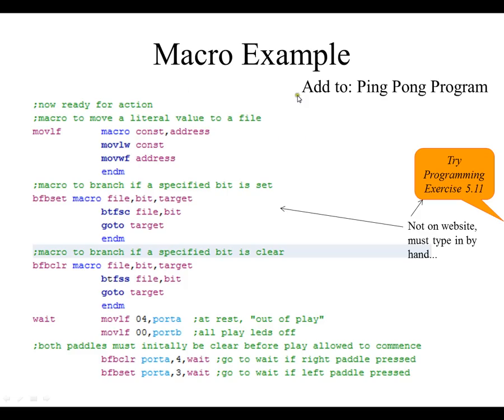So here's a macro example. And this is part of a programming exercise. This is example 5.11 in the book. And it's also part of a programming exercise 5.11. One comment though is, some students ask the question, where is this code on the website? Well, it's not on the website. You have to type it out by hand. So it's going to be good for you to type this out by hand. And you can add it to the ping pong program to do this programming exercise 5.11. But let's look at this really quickly.